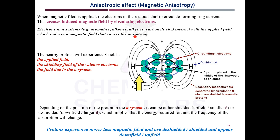When there is a pi electron cloud present in a molecule, the electrons start to circulate, forming ring currents. The applied magnetic field is perpendicular to the pi electron cloud. The pi electrons move in circular motions, and because of this movement a second magnetic field is generated called the induced magnetic field. So your protons are now experiencing three fields: the applied field, the field from the valence electrons, and the field due to the pi system.